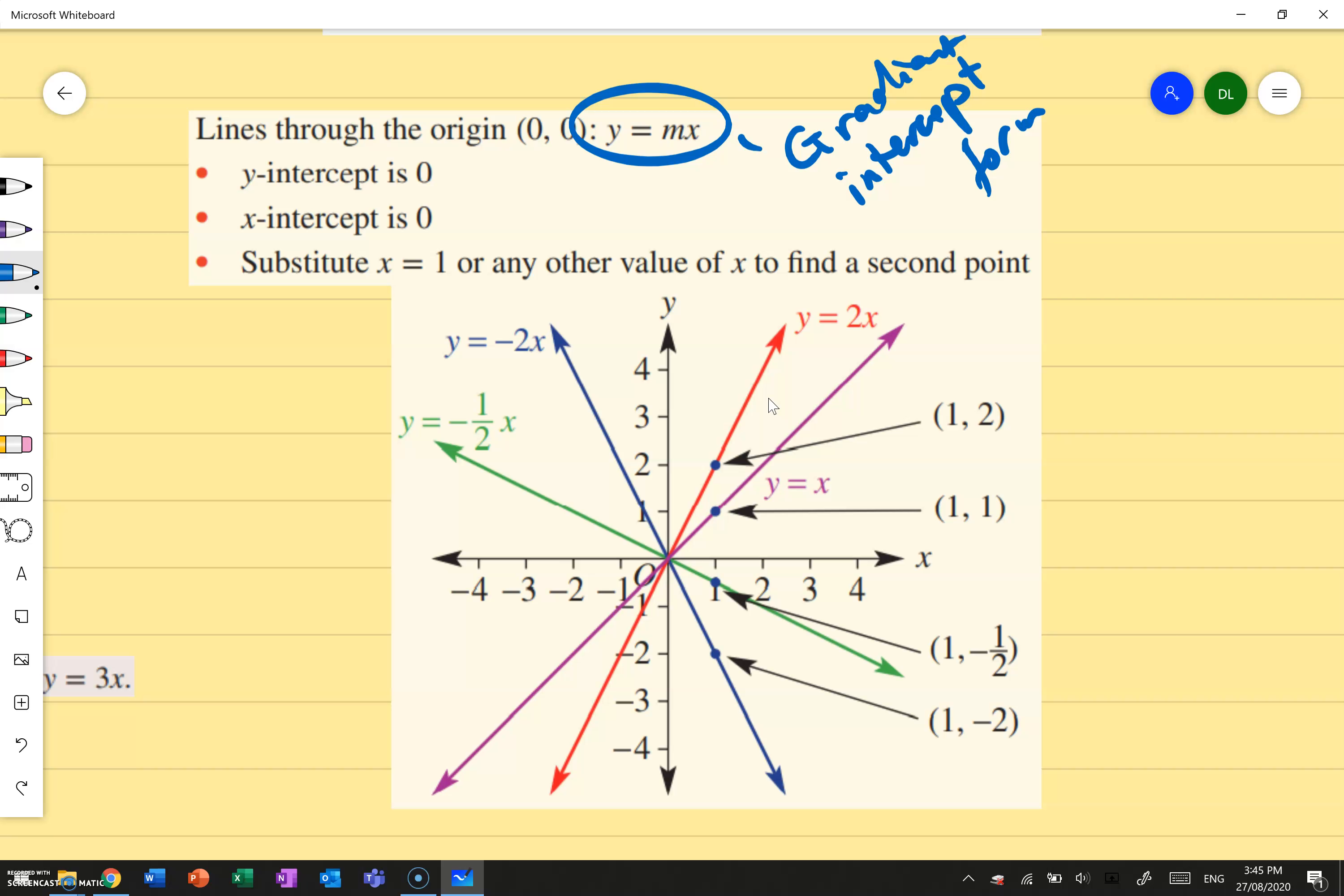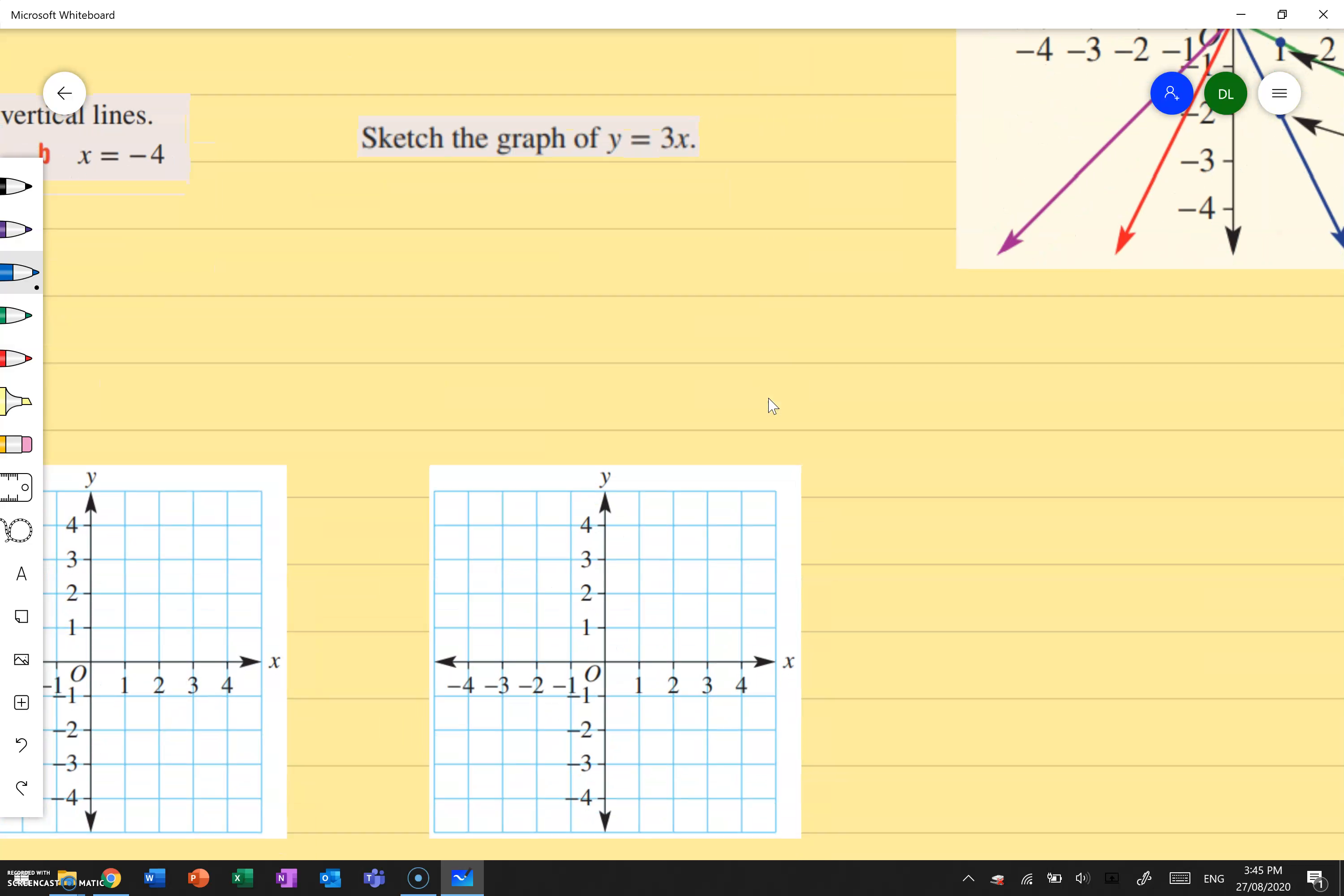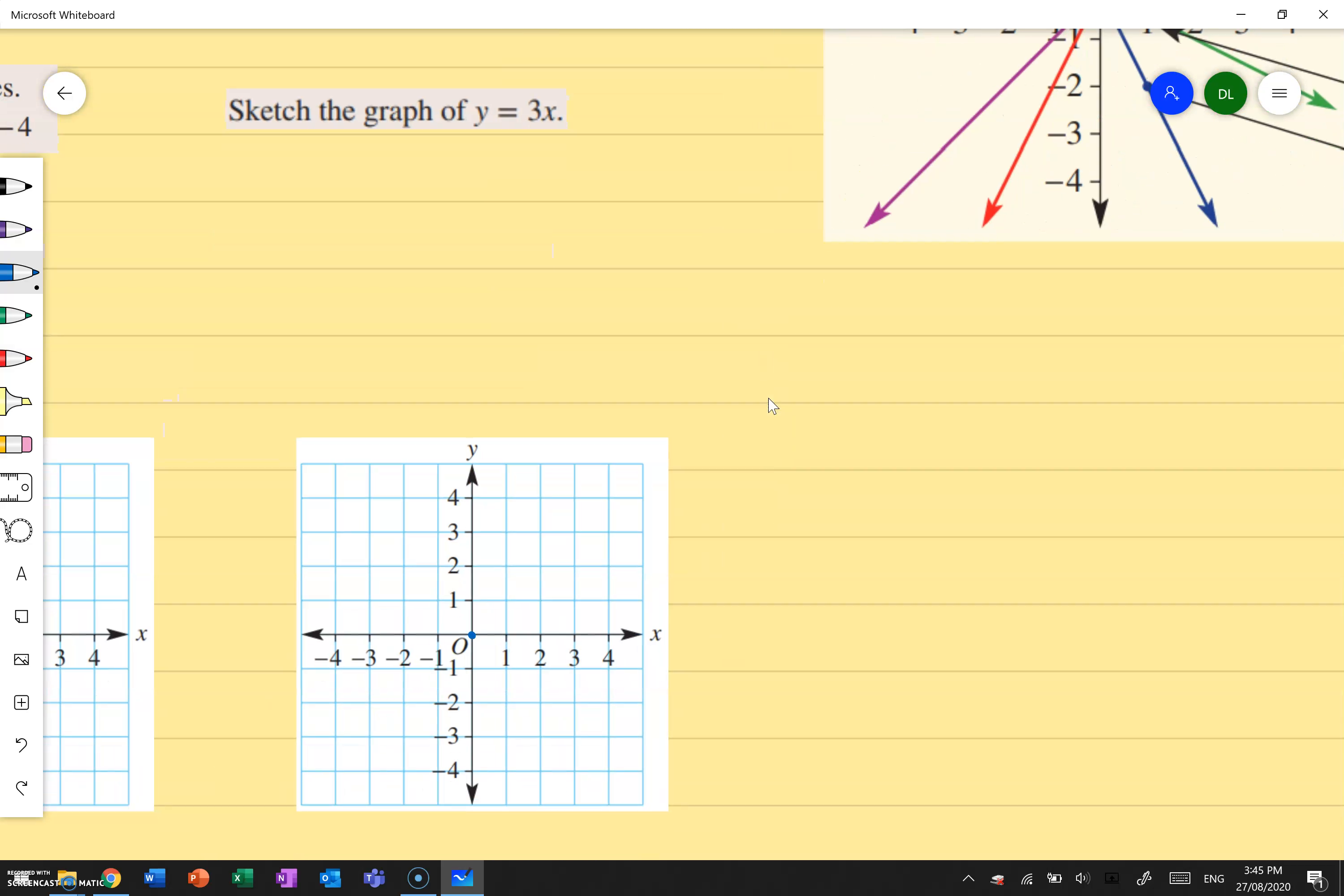What we can do is we substitute any value of x so that we can get a second point and then draw the graph. So over here I've got sketch the graph of y equals 3x. Now based on this you can see that m is going to be some number. So we see y equals 3x, y equals mx, they're in the same form. So I know it's going to pass through zero zero.